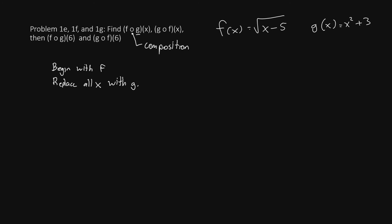So let's begin with function f. That's square root of x minus 5. We can replace the x with g, giving us square root of g minus 5. Now replace the g with this function, x squared plus 3. So we'll now have square root of x squared plus 3 minus 5. Now we can combine the 3 and the minus 5 to get square root of x squared minus 2.